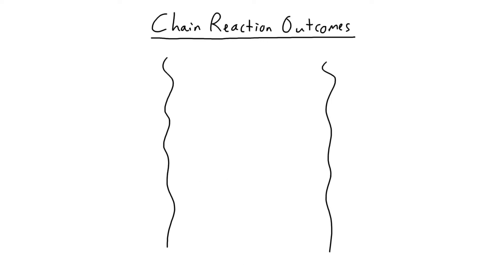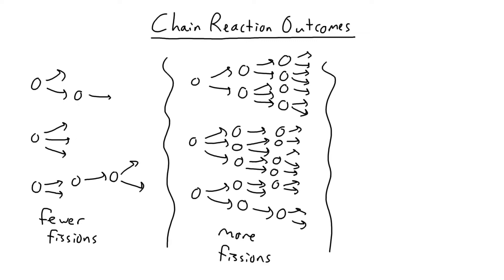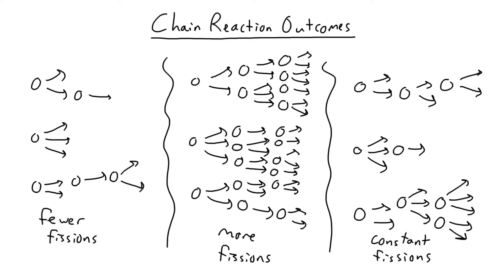From this, we can logically deduce three different chain reaction outcomes, one where we have fewer fissions over time, one where we have more fissions over time, and one where we have a constant number of fissions over time.